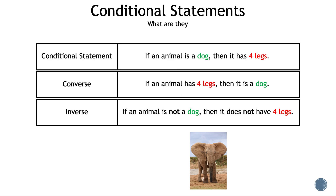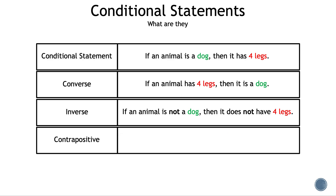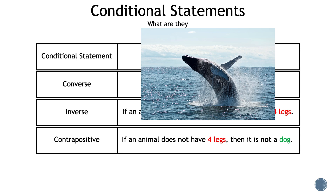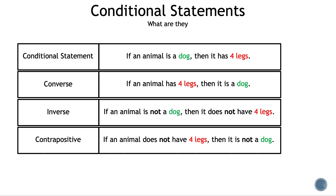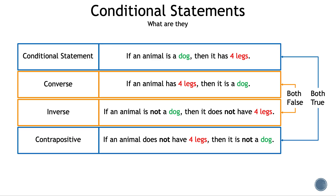The next statement we're going to introduce is contrapositive. With contrapositive, the hypothesis and the conclusion switch, and we negate them. The contrapositive statement is: if an animal does not have four legs, then it is not a dog. This is always true — a whale is a perfect example. These statements follow a pattern where the conditional statement and the contrapositive are true, and the converse and inverse are false.